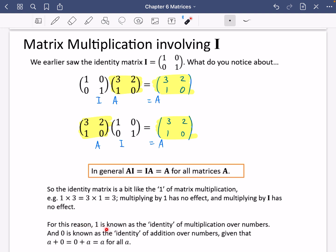For this reason, 1 is known as the identity of multiplication over numbers because when you multiply things by 1 it doesn't change them. 0 is known as the identity of addition over numbers because when you add 0 to things it doesn't change them at all.